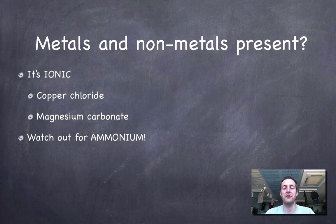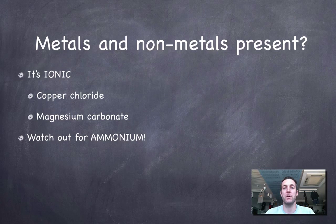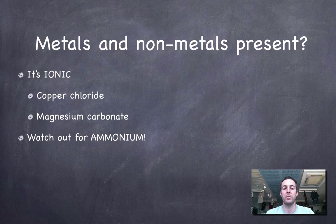If you've got metals and non-metals present, then you're going to be ionic. So things like copper chloride and magnesium carbonate are combinations of metals and non-metals, and they will always have ionic bonding.